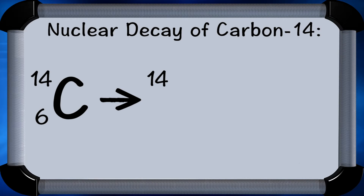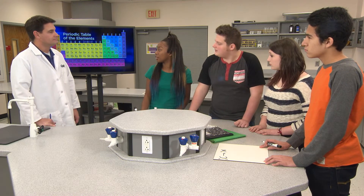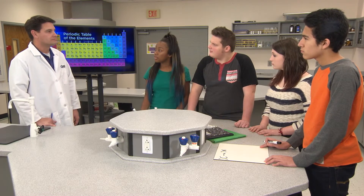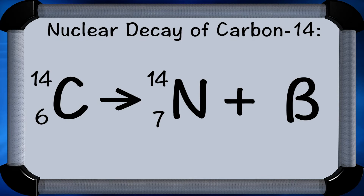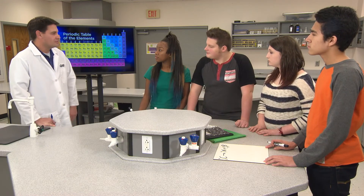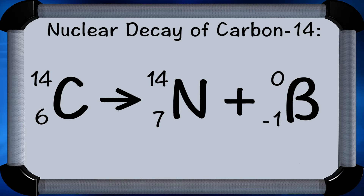We had 6 protons and 8 neutrons; one neutron changed into a proton, leaving 7 protons and 7 neutrons. The mass number stays 14, and 7 goes below as the atomic number — so our equation needs nitrogen. Because nitrogen contains 7 protons, that's what the daughter nuclide has. A beta particle — an electron — is also released from the nucleus. Add the beta particle to the equation: mass number 0 and atomic number negative 1. This balances the equation: total mass number of 14 on both sides and total atomic number of 6 on both sides.